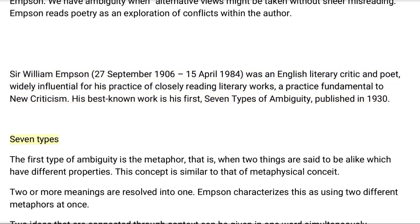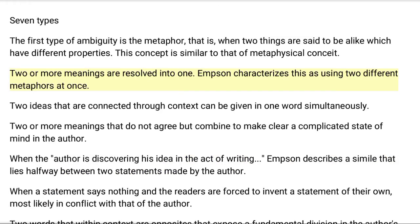The first type of ambiguity is the metaphor — when two things are said to be alike which have different properties. This concept is similar to that of metaphysical conceit. The second type is when two or more meanings are resolved into one, characterized as using two different metaphors at once. The third type is when two ideas connected through context are given in one word simultaneously.